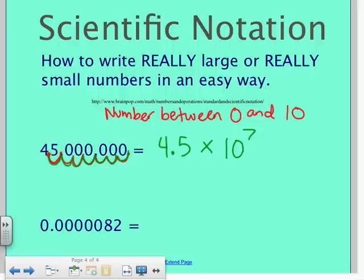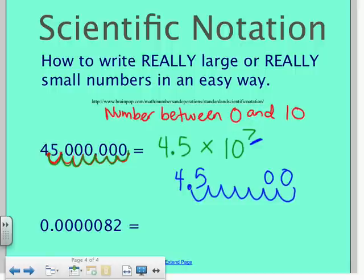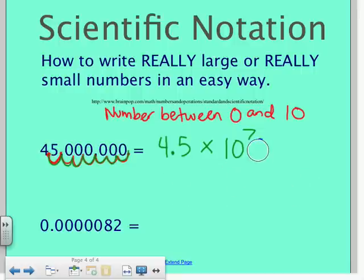Going back the other way to verify: when there's a power of 10, the exponent tells you how many times to move the decimal. So move it 1, 2, 3, 4, 5, 6, 7 places and fill in zeros for those places. That gives you 45 million — confirming that 4.5 times 10 to the 7 equals 45 million.